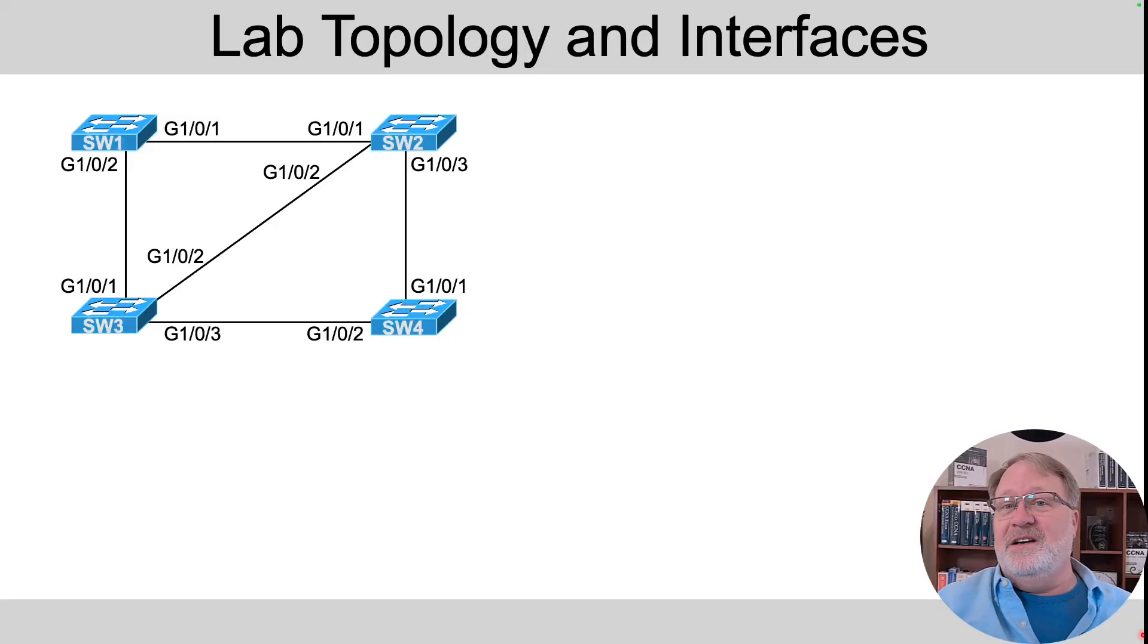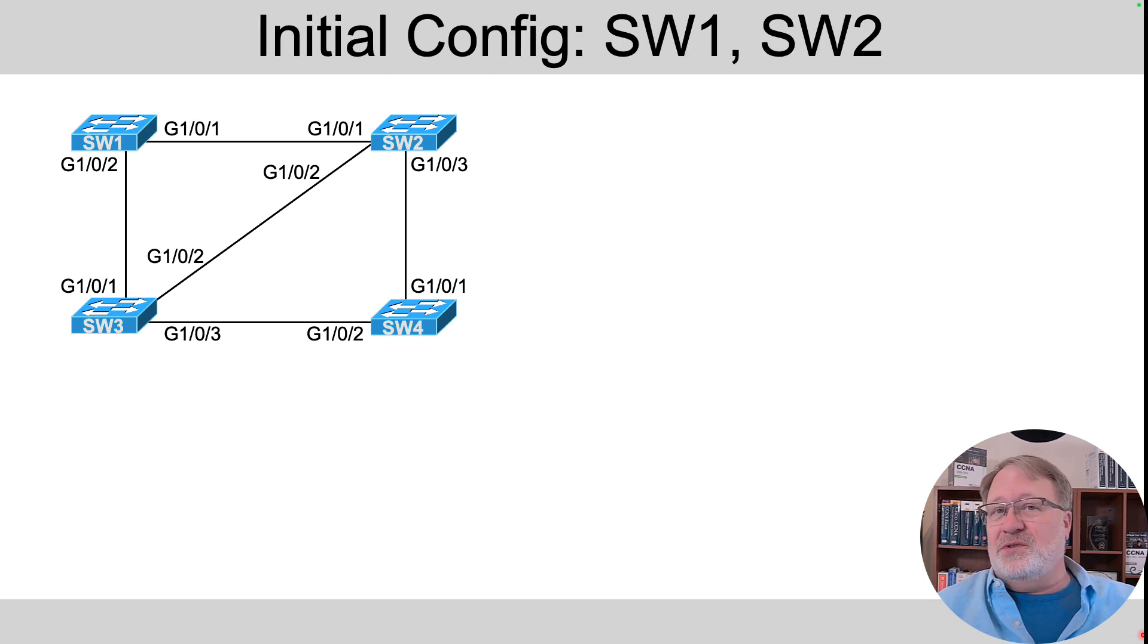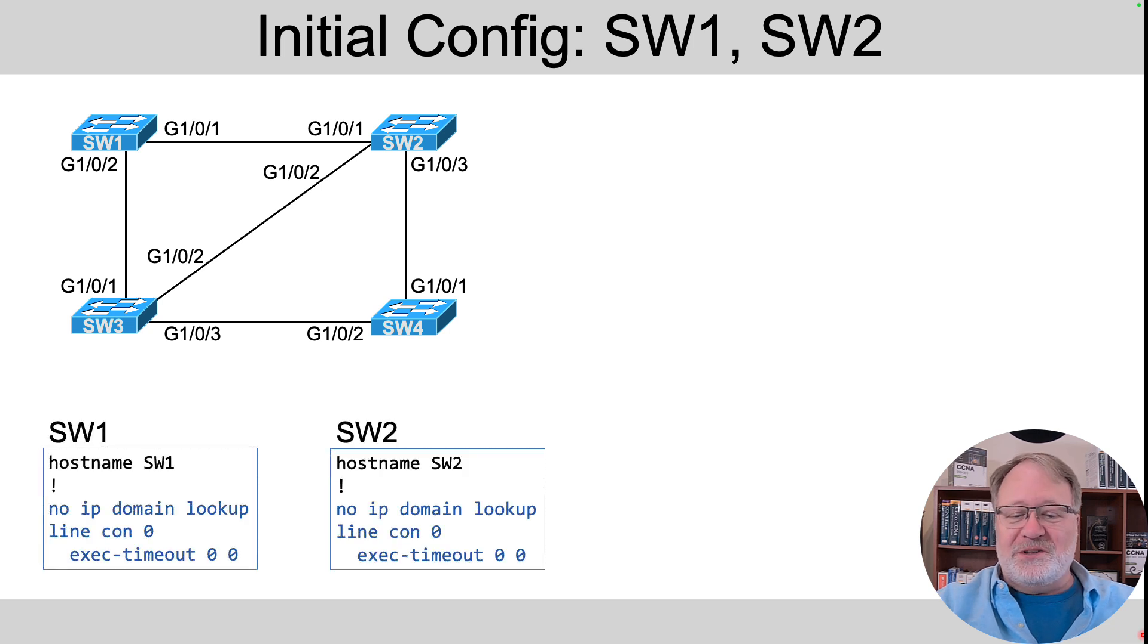First off, the topology. It's four switches with five links. They all need to trunk, but there are different rules in the lab about what configuration settings to use. There is some initial configuration, but none of the initial configuration impacts VLAN trunking. So just to show you a few, switch one and switch two both have their host name set just to keep things straight.